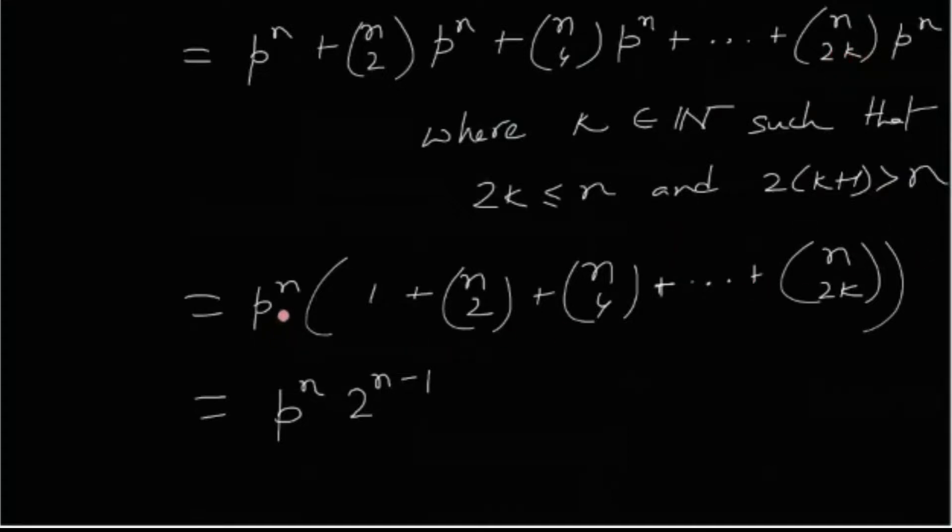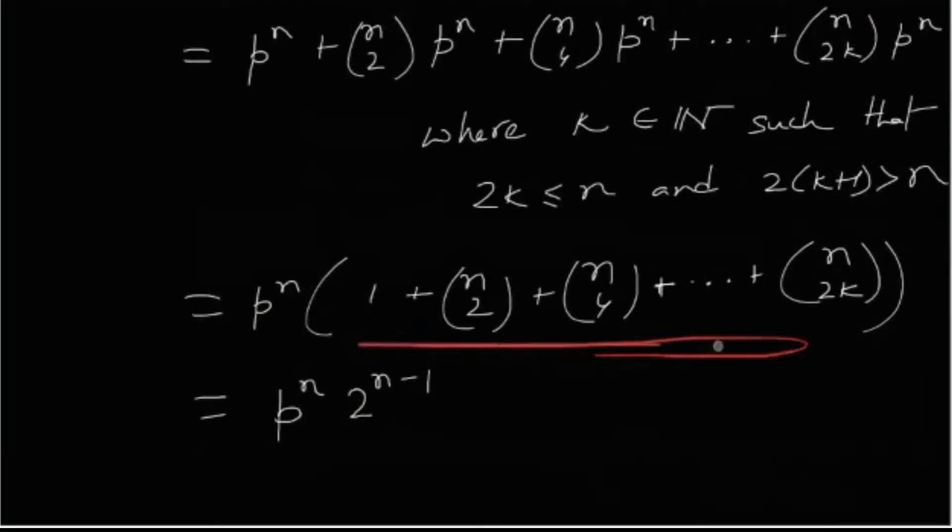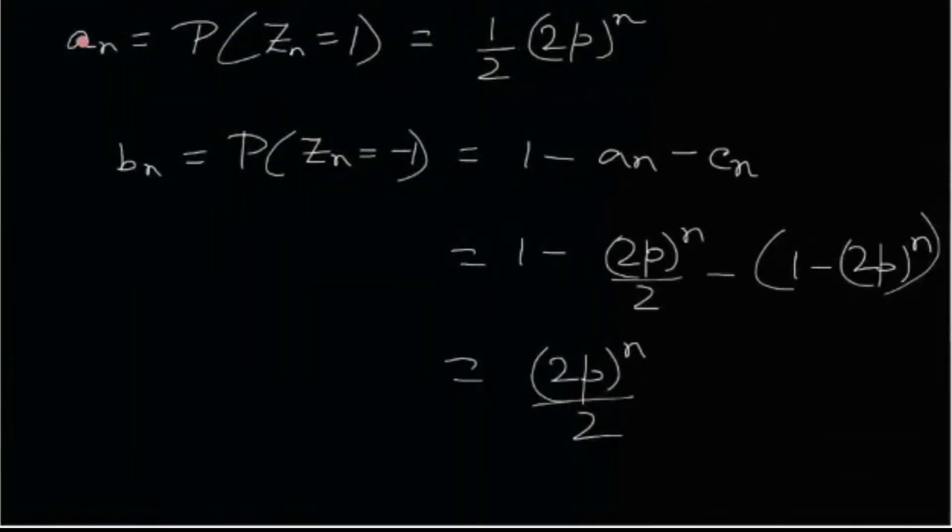So this is nothing but p to the n times common. I have just taken the common from here and this is 2 to the n minus 1. This is the binomial theorem result. So you should know that this part, this thing is actually 2 to the n minus 1. So this is nothing but an is equals to probability. Zn equals to 1 is 2p whole to the n by 2.